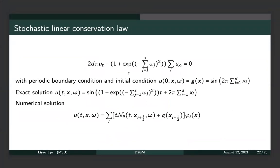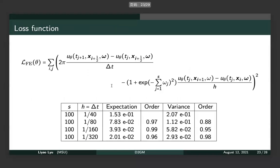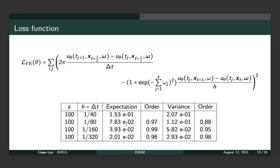Next we consider the stochastic problem: a linear conservation law with random coefficients. The numerical solution is constructed similarly as before, except that the random coefficients are fed as inputs to the neural network. The loss function is similar as before with random variables as coefficients. We only use the fully-discrete method here because the semi-discrete method consistently gives poor results.